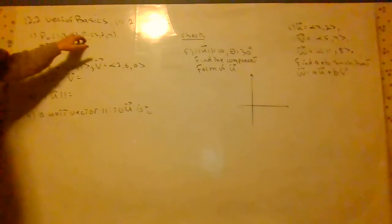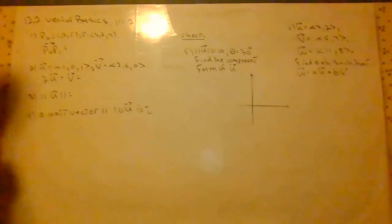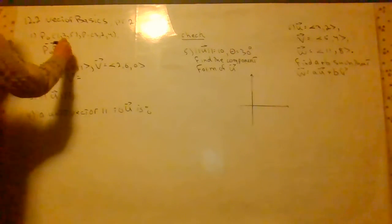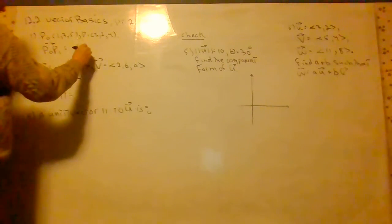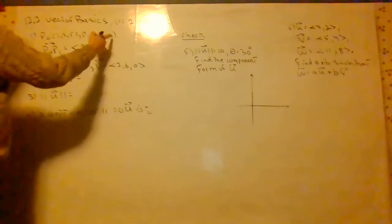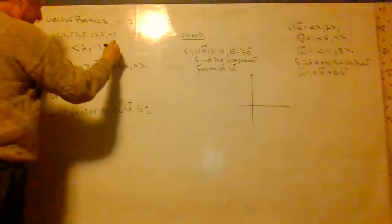P0 is (1, 3, 5), P1 is (3, 2, 4). The vector from P0 to P1 is 3 minus 1 is 2, 2 minus 3 is negative 1, 4 minus 5 is negative 1.